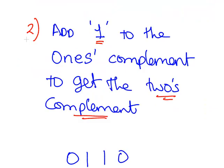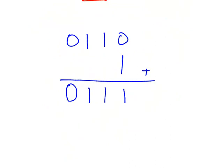Now the next stage is to find the 2's complement. We add 1 to the 1's complement to get the 2's complement. So this is what we had from the last stage: 0, 1, 1, 0 — that's the 1's complement. We add 1 to it: 0, 1, 1, 0 plus 1 gives us 0, 1, 1, 1. That's a pretty straightforward step in this case.